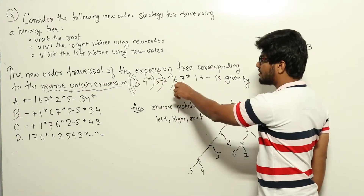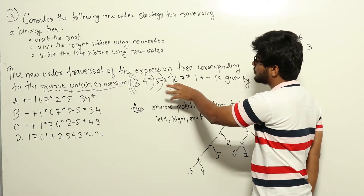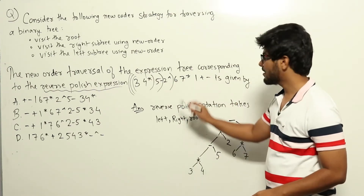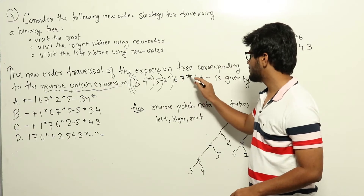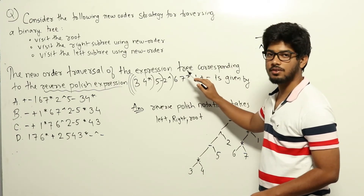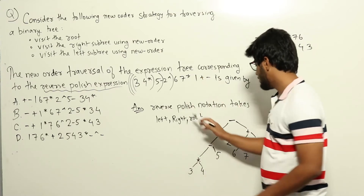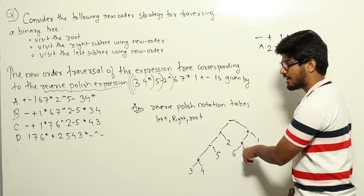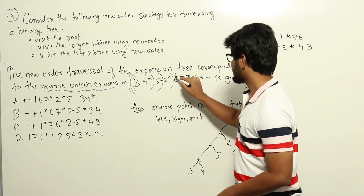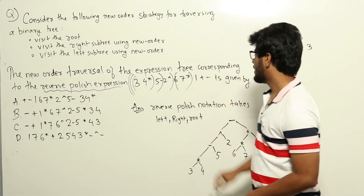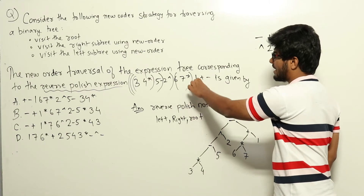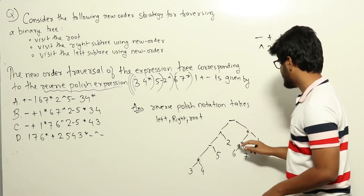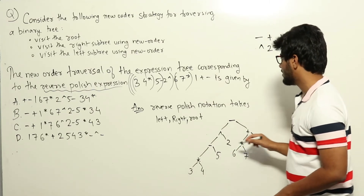Now after this we see two numbers together and then one operator: 6 will be the left subtree of star, and 7 will be the right subtree of star, and star will be the root — so we start a new tree here: 6, 7, and star like this. After that, we have this part and then 1 and then plus — meaning this is the left subtree, 1 is the right subtree, and we have plus drawn here.